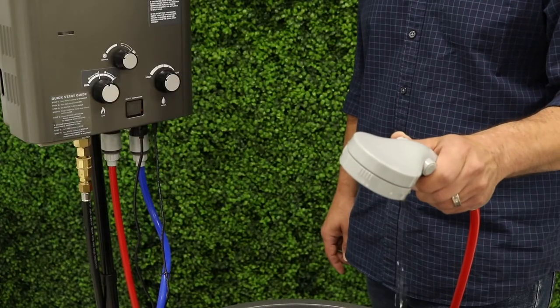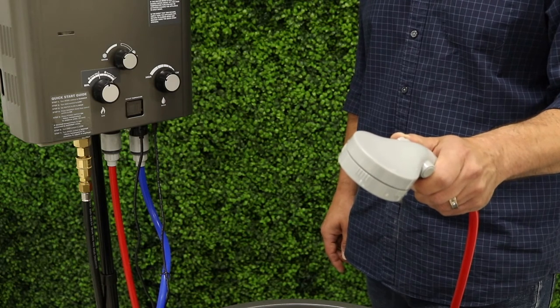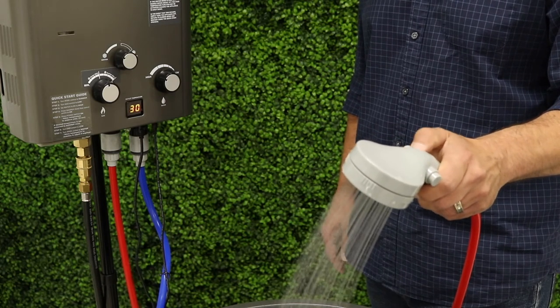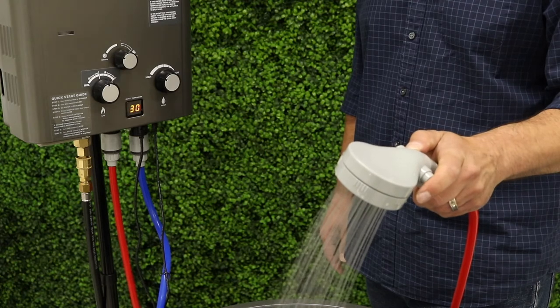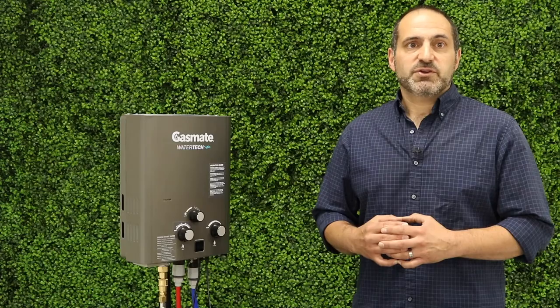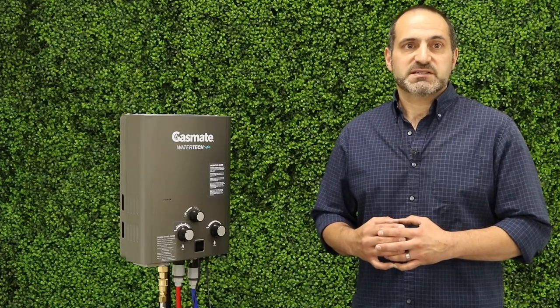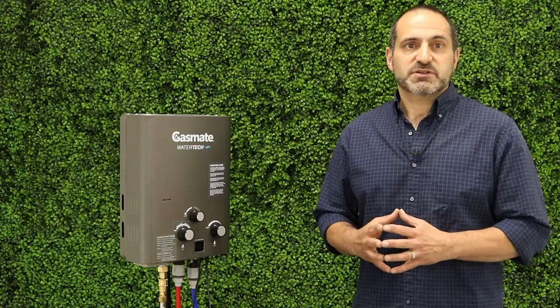If this occurs simply turn the water flow off at the shower head. Wait a few seconds and then turn it back on. This will reignite the unit. If the unit is rising above 50 degrees consistently adjust the temperature control so that the unit will operate under 50 degrees.